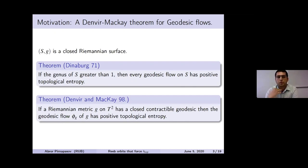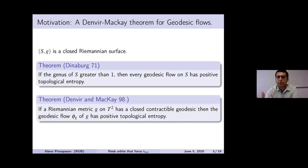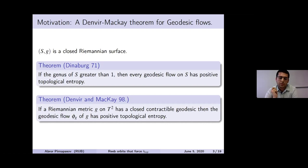We always assume S_g is a closed Riemannian surface with Riemannian metric g. Dinaburg proved that if you have any higher genus surface, then every geodesic flow on this higher genus surface always has positive topological entropy. If we have a closed orientable surface, then up to classification we have only three choices: higher genus, torus, or sphere. We know the sphere and torus cases with standard metric always have zero topological entropy.